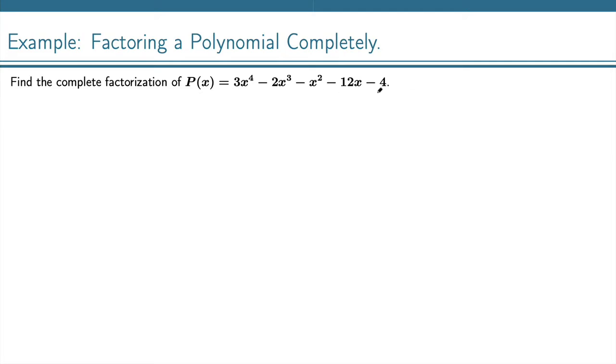We have previously factored this down to linear and irreducible quadratics in the real numbers, and we obtained p(x) = (x - 2)(3x + 1)(x^2 + x + 2).